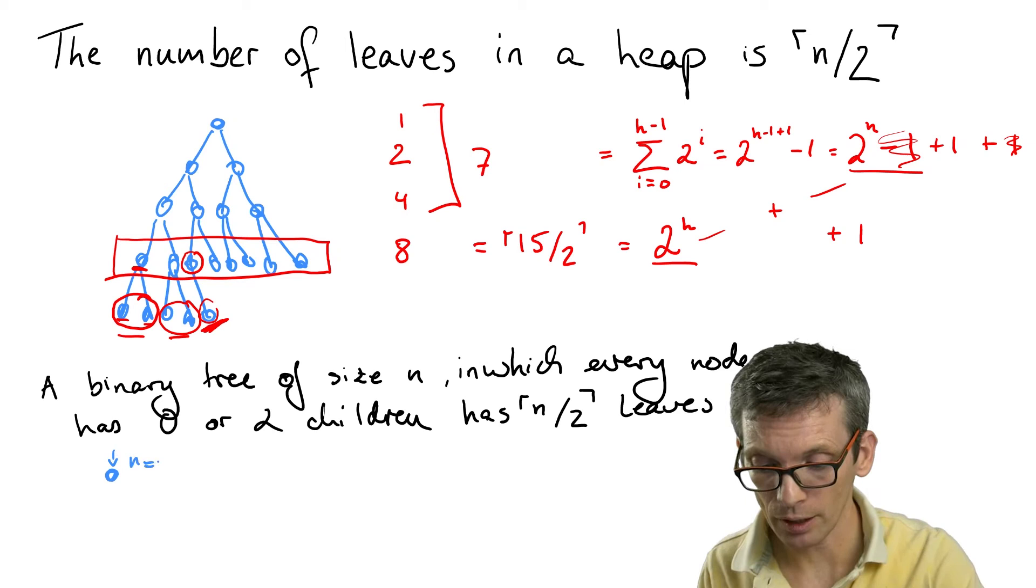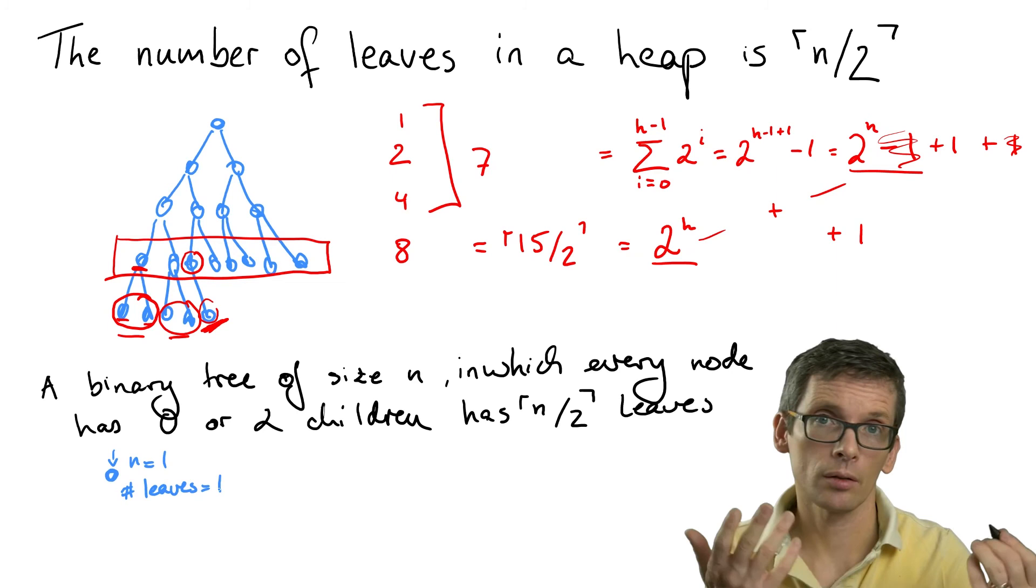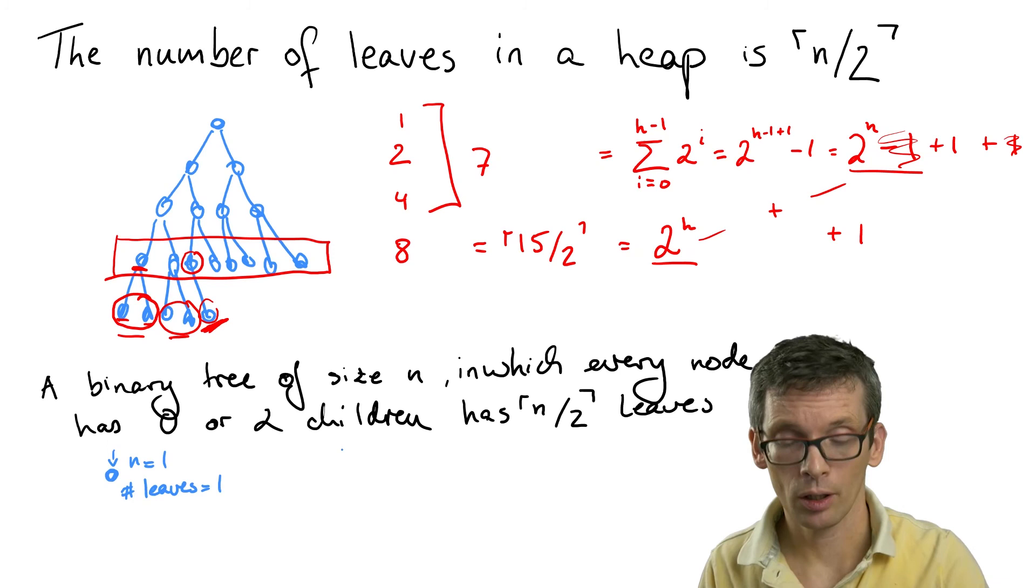And there we have n is one, and the number of leaves is also one, which is one half rounded up.